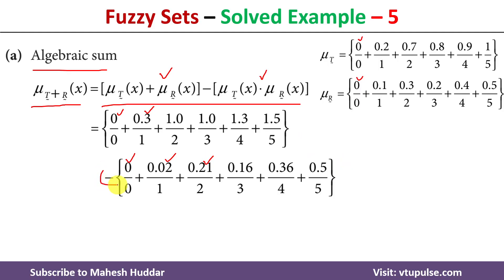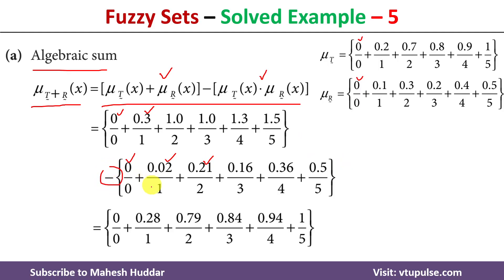Now we take the difference: 0 minus 0 equals 0; 0.3 minus 0.02 equals 0.28; 1 minus 0.21 equals 0.79, and so on. This is how the algebraic sum for the given two fuzzy sets looks.